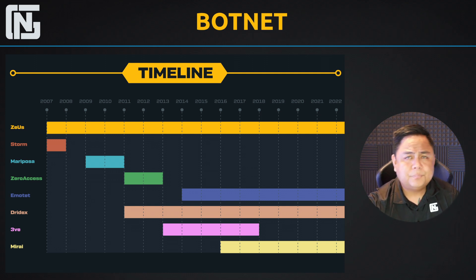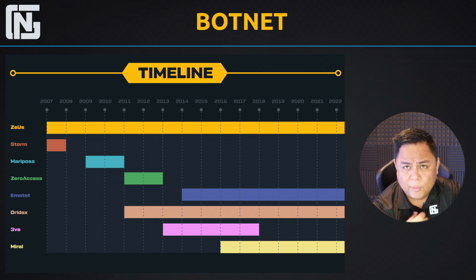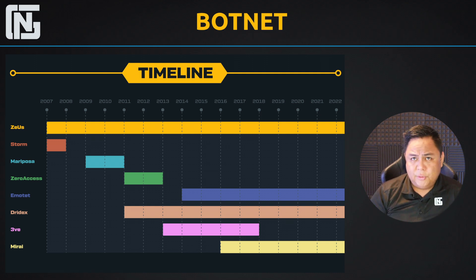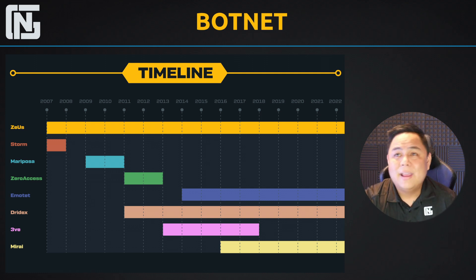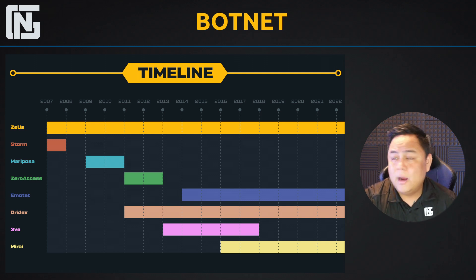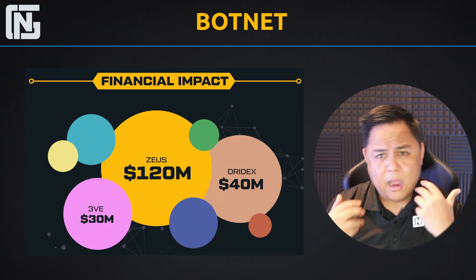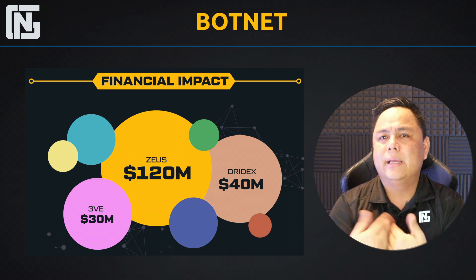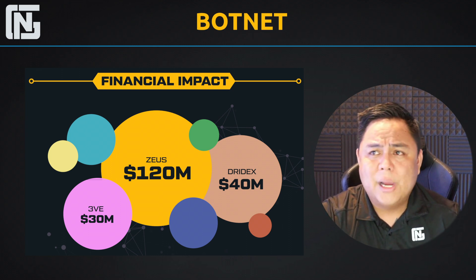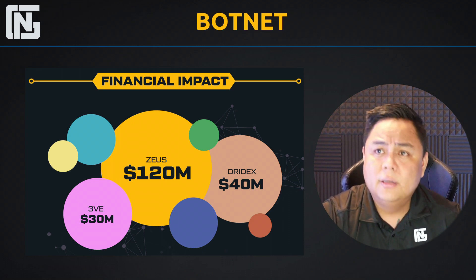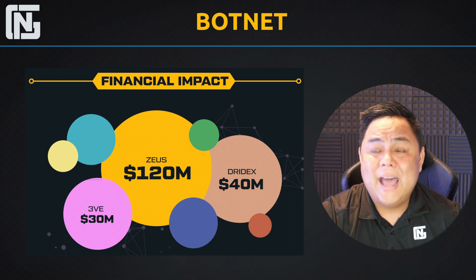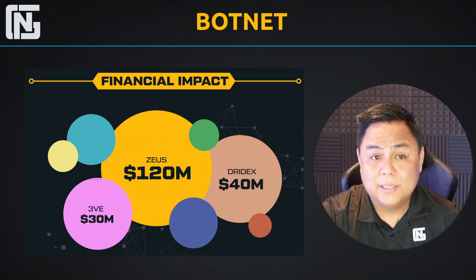Take a look at the graphic showing some notable botnets that have been in operation for a while. The Zeus botnet has been in operation from 2007 to 2022 — that is roughly 15 years of operation, longer than some businesses out there. It is not uncommon for a botnet to operate for years at a time. The financial impact to organizations: Zeus caused roughly $120 million in damage, Dridex $40 million, and 3VE $30 million. For its 15 years of operation, that's roughly $8 million of damage per year done by the Zeus botnet — a substantial amount of money.